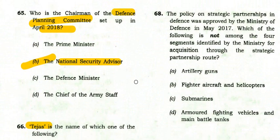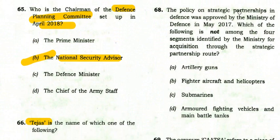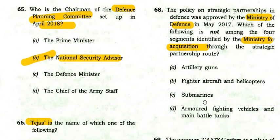The Strategic Partnership policy in defense was approved by the Ministry of Defense in May 2017. Which of the following is not among the four segments identified for acquisition through the strategic partnership route? Options: artillery guns, fighter aircraft and helicopters, submarines, armored fighting vehicles and main battle tanks.